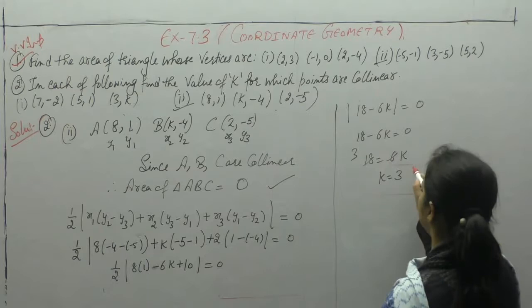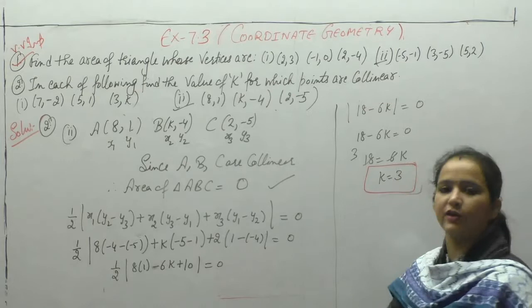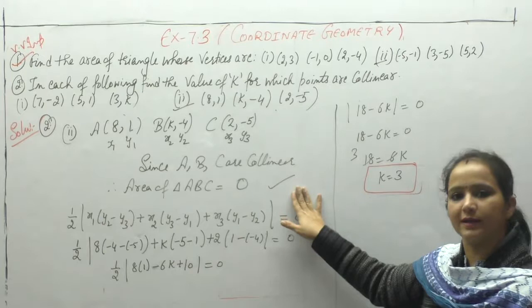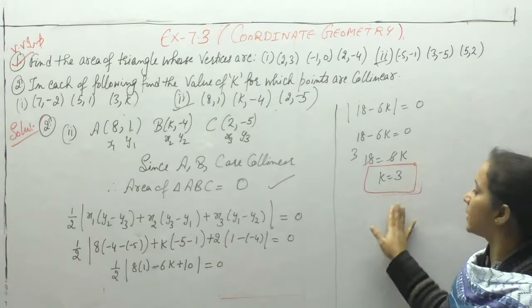So K = 3 के लिए, जो points होंगे, वो collinear होंगे. जैसा कि कहा, area of triangle find करेंगे, हमें points collinear given हैं, it means area of triangle 0 होगा. Area of triangle की value find की, उसे 0 के equal रखा, तो K की value आई. Note it down.